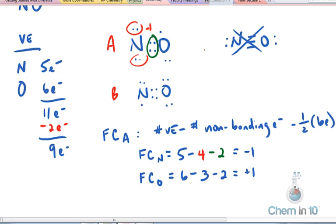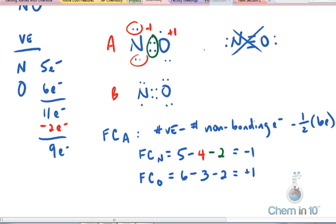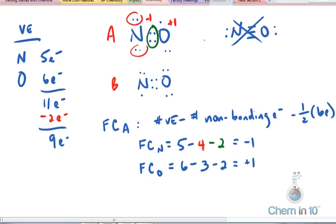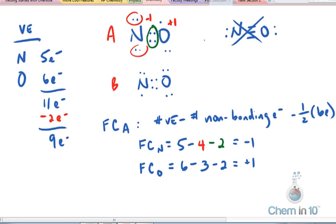the positive charge, and oxygen is more electronegative than nitrogen. So if they have to have formal charges, it would be better the other way around, oxygen with a negative 1 and nitrogen with a positive 1. Ideally, we'd like everybody to have a zero formal charge.